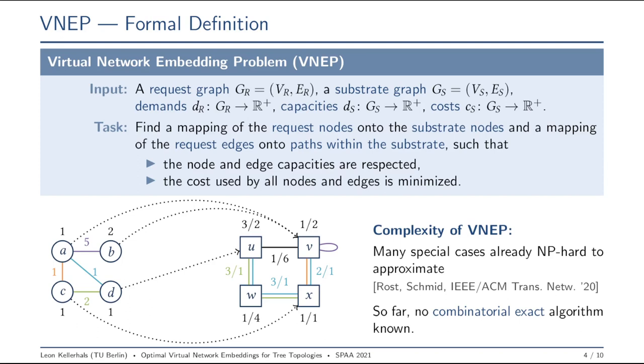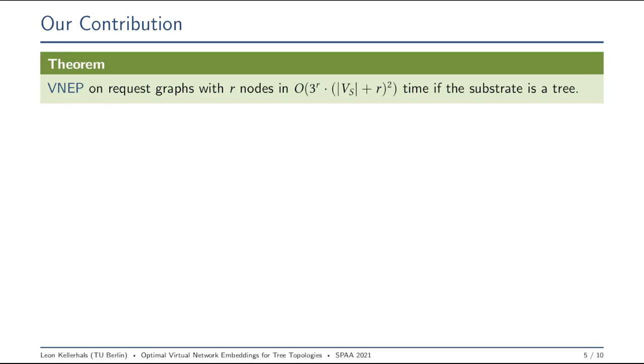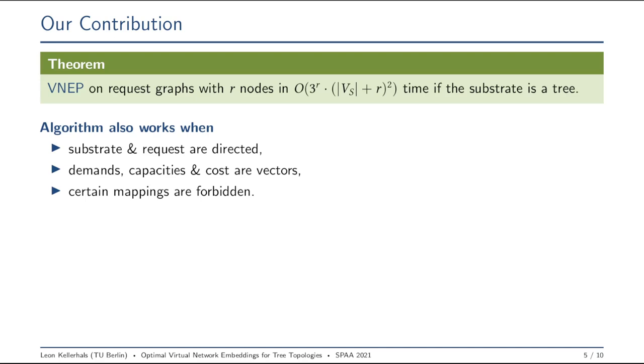We provide a combinatorial exact algorithm that works for tree substrates and is highly efficient if the request graph is not too large. The algorithm is pretty simple and very robust, and this allows for more general models also. We can deal with directed graphs and multi-dimensional demands, capacities and cost, and we can also deal with a list of prohibited mappings, for example, and possibly even more generalizations.